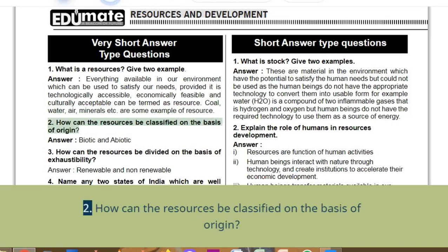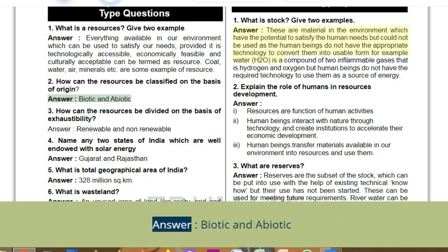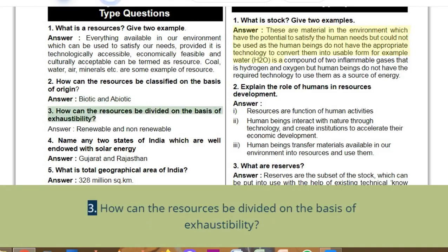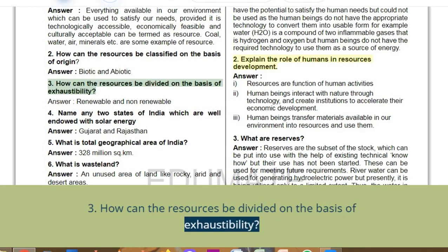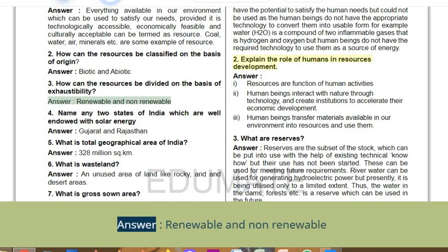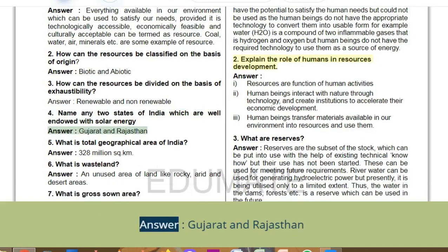Q2: How can resources be classified on the basis of origin? Answer: Biotic and abiotic. Q3: How can resources be divided on the basis of exhaustibility? Answer: Renewable and non-renewable. Q4: Name any two states of India well endowed with solar energy. Answer: Gujarat and Rajasthan.